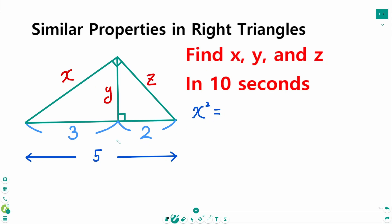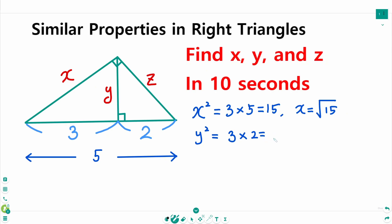x squared equals 3 times 5, which is 15, then x equals square root of 15. y squared equals 3 times 2, which is 6, then y equals square root of 6. z squared equals 2 times 5, which is 10, then z equals square root of 10.